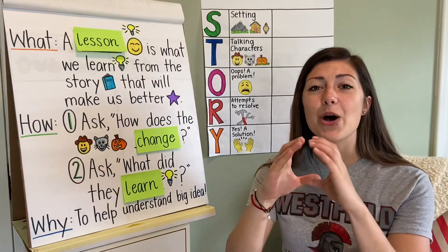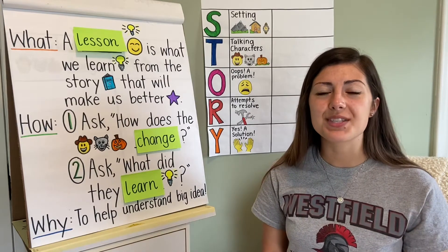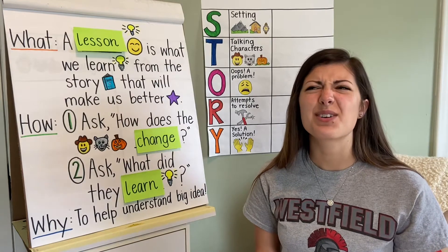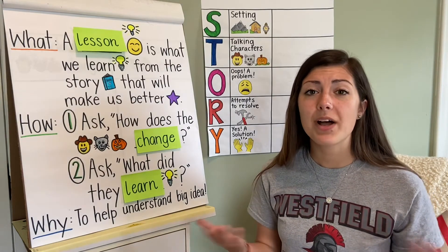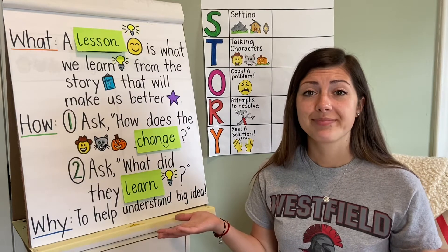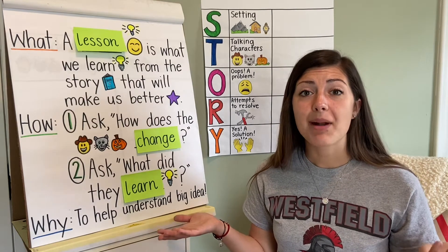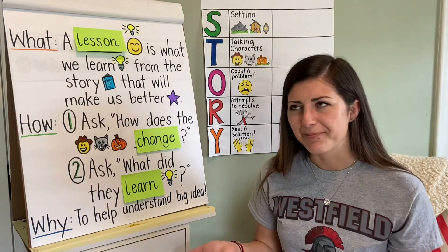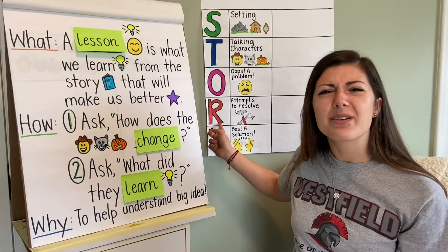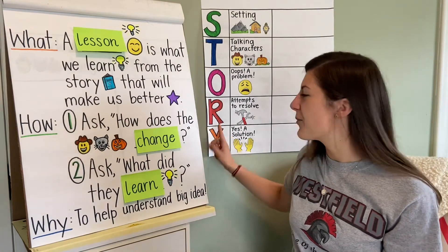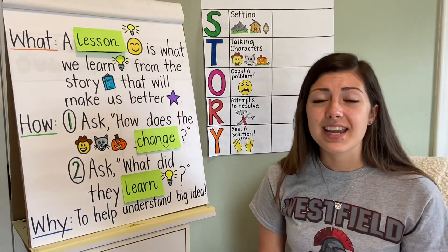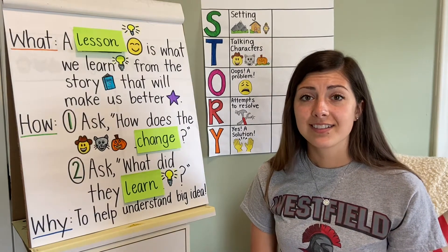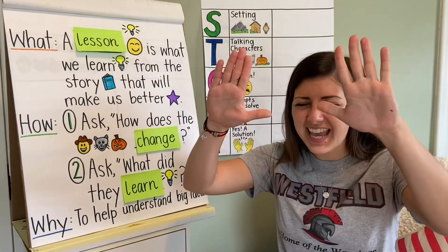Next up we have O. What does O stand for? O stands for oops, a problem. And what is a problem? A problem is when the character really wants something but can't have it. Our R is attempts to resolve — we have not worked on that in kindergarten, so we're going to skip to Y. What does Y stand for in our story chart? Y stands for yes, a solution.